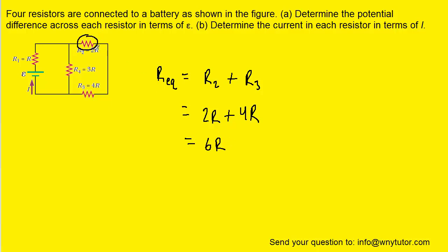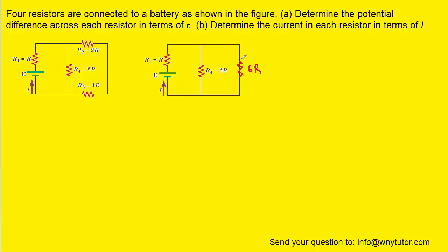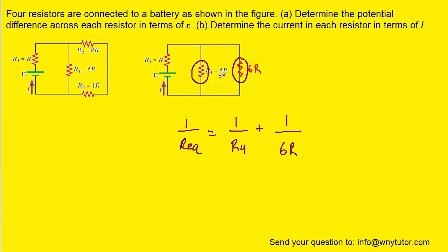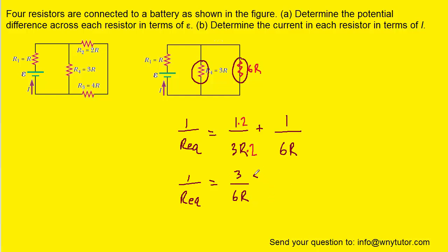We'll combine those two resistors into a single equivalent resistor with resistance 6R. That equivalent resistor is in parallel with R4, which has a resistance of 3R. To find the equivalent resistance of the two parallel resistors, we use the parallel resistance equation. Finding a common denominator of 6R and adding the fractions, then inverting both sides of the equation, we get REQ equals 6R over 3, which reduces to 2R.